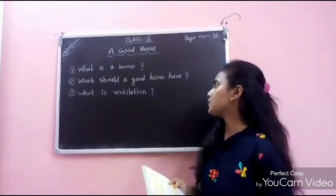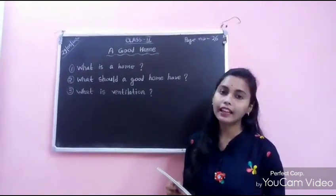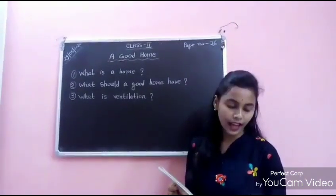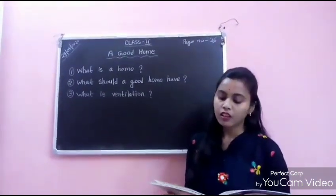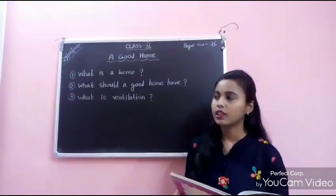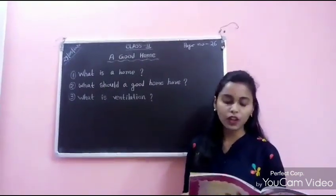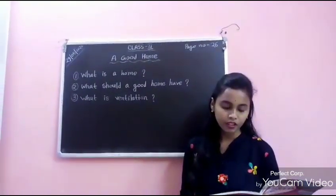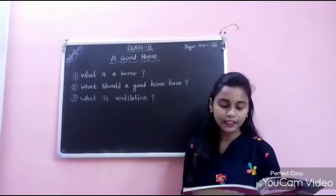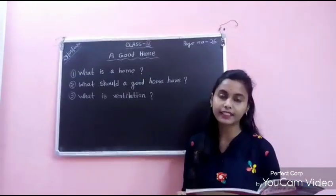Number 2: What should a good home have? Just 4 walls do not make a good home. A good home should have doors, windows, and ventilators. Doors and windows allow fresh air and sunlight to come inside the house. Sunlight helps in killing the germs in the house. Ventilators are small openings which allow fresh air to circulate inside the rooms.